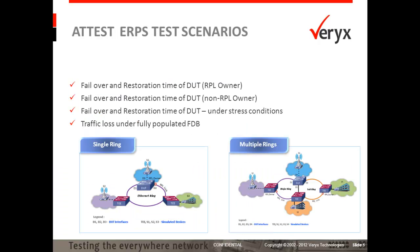The ADDIST ERPS test cases verify the Ethernet ring protection switching support for various test scenarios. The ADDIST ERPS determines the failover and restoration time of the device under test as ring protection link owner and non-ring protection link owner in single and multiple rings. In a single ring topology scenario, it measures the failover and restoration time under stressful conditions and also verifies traffic loss behavior when the device under test filtering database is fully populated.